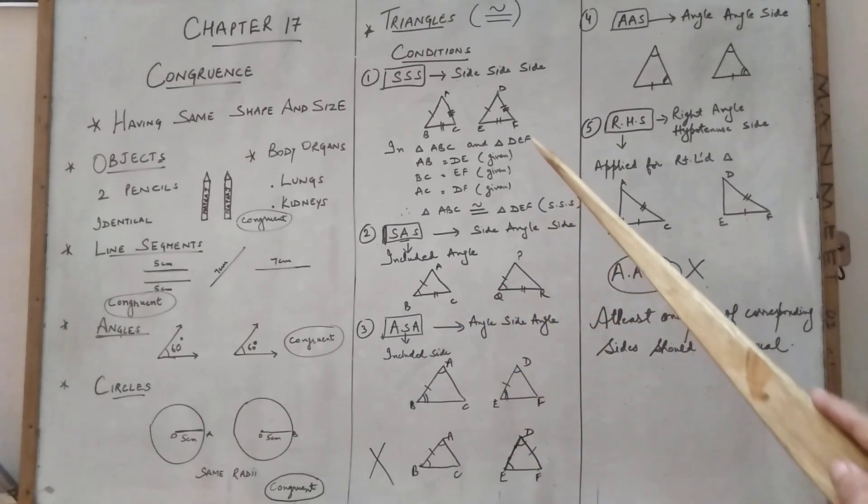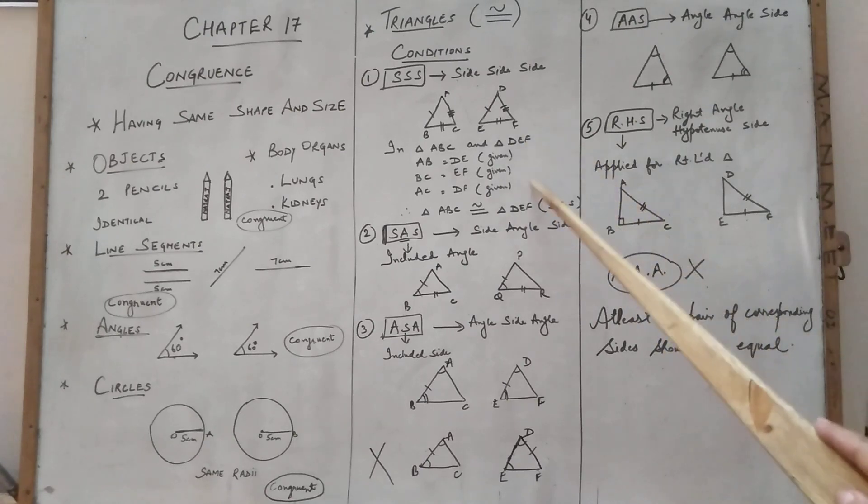Now here I will not prove like this. All the triangles we have to explain like this, then only they will become congruent.